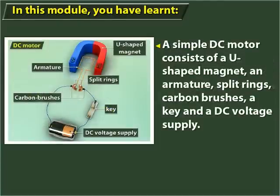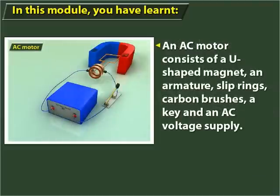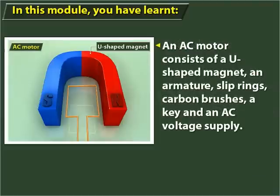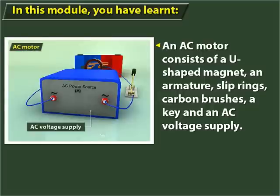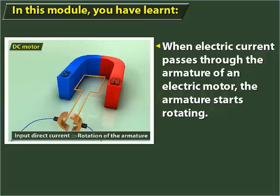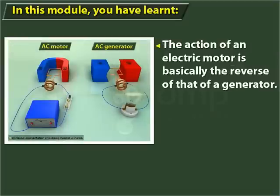A simple DC motor consists of a U-shaped magnet, an armature, split rings, carbon brushes, a key, and a voltage supply. When electric current passes through the armature of an electric motor, the armature starts rotating. The action of an electric motor is basically the reverse of that of a generator.